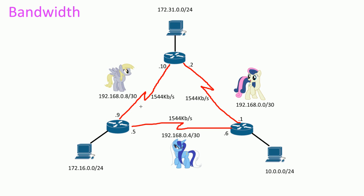You send a TTL of one, and when the TTL reaches zero the router sends a reply back saying the time-to-live has been exceeded. This prevents packets from looping forever — each router decrements that TTL number. That's what traceroute uses, so the first hop is identified as the gateway.